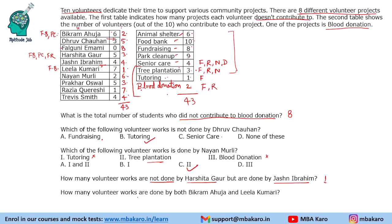How many volunteer works are done by both Bikram Ahuja and Leela Kumari? Bikram Ahuja is doing 2 tasks and Leela Kumari is doing Food Bank only. So there is only 1 task done by both of them. That was the solution to the set and the answers to all the questions.